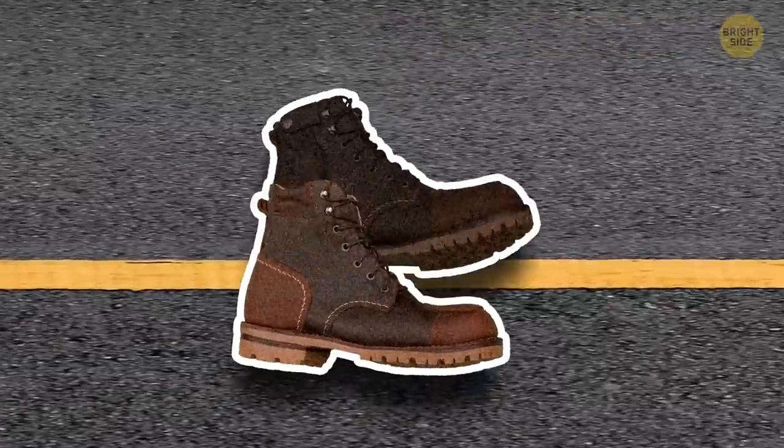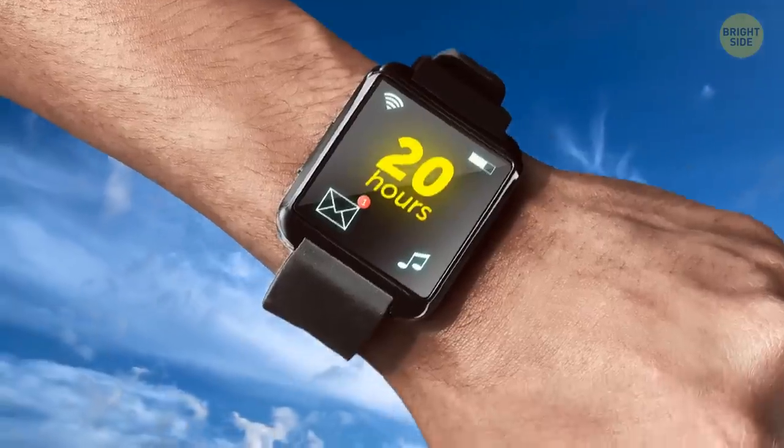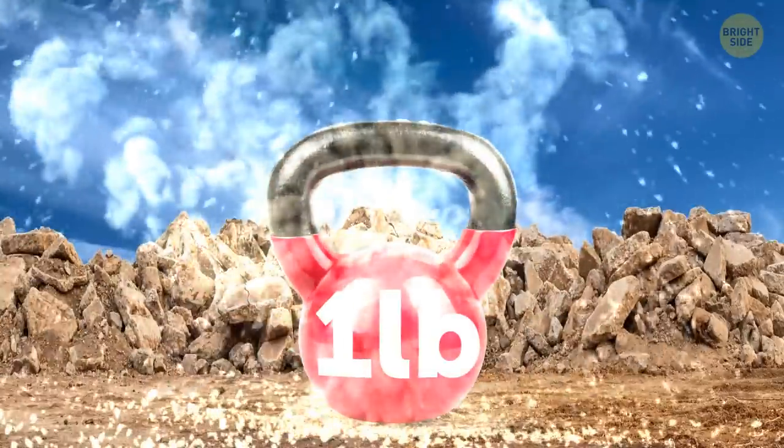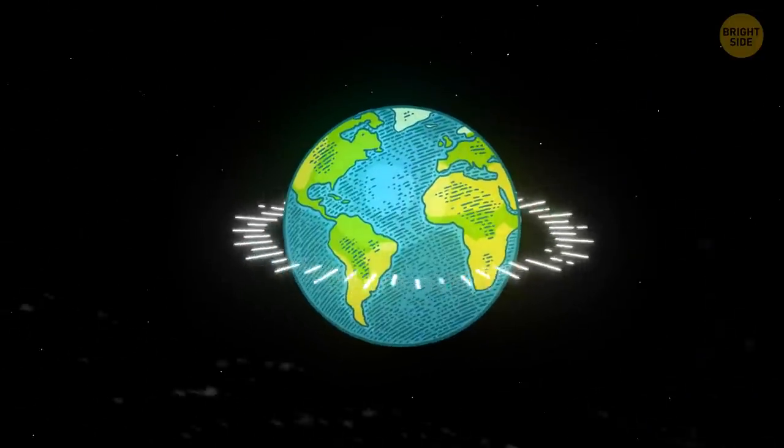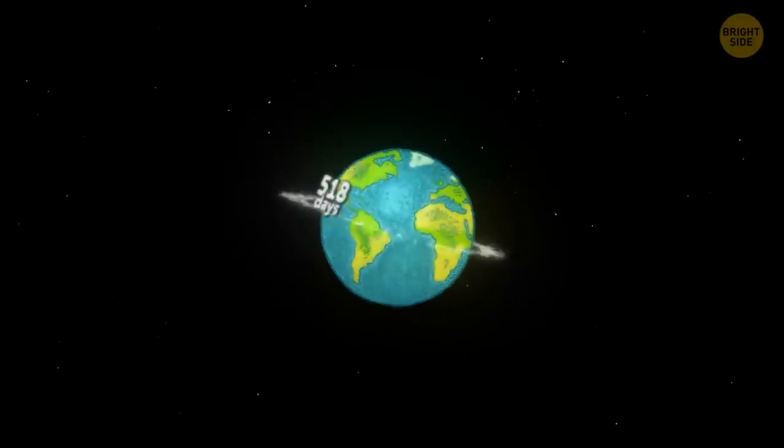If you walked 2 miles per hour, you'd have to walk for 20 hours straight to lose 1 pound. And it would take you 518 days and 8 hours to circle the equator.